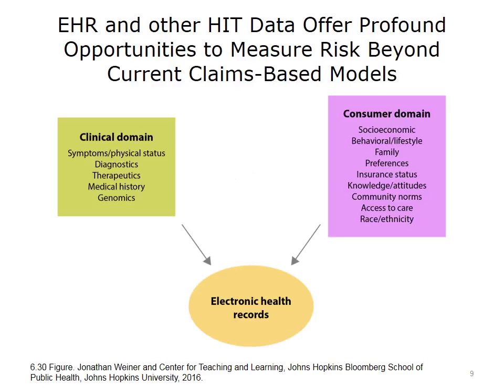To date, most predictive modeling and risk segmentation within the field of population health have used administrative risk data derived from hospital admissions records and health insurance claims information. Some also use surveys, but the problem with surveys is that there are many non-respondents and it's very expensive to collect those data. The outcomes of most risk adjustment tools to date have been on cost and utilization variables. This is a very exciting time in the field, as researchers are looking at all types of new sources of information that can increase both the accuracy and scope of the models.